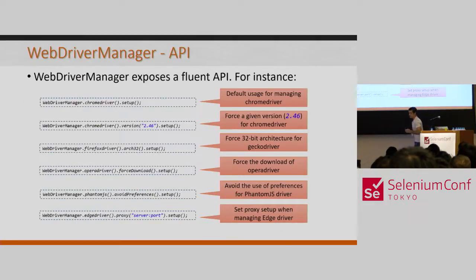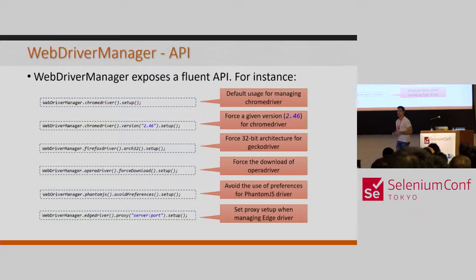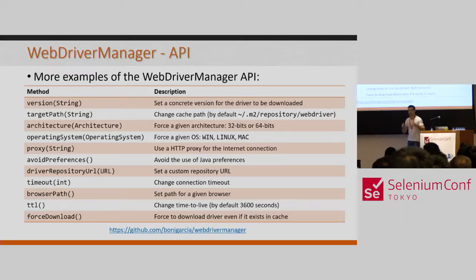Now I'm going to explain a bit more about the WebDriverManager API. It's a very simple, fluent API. Some examples: the default call to WebDriverManager, specifying a fixed version, forcing a given platform such as 32-bit, forcing a download even if the driver exists in the cache, avoiding user preferences, or setting up a proxy connection. There is a lot of ways of tuning WebDriverManager — you can find all of them in the documentation in the GitHub repository.